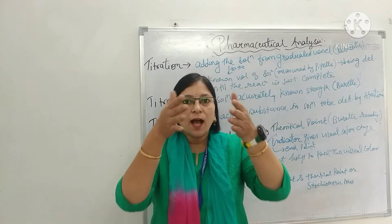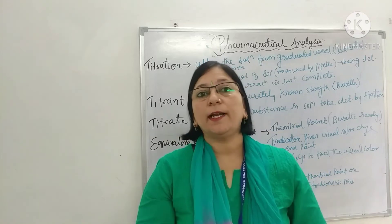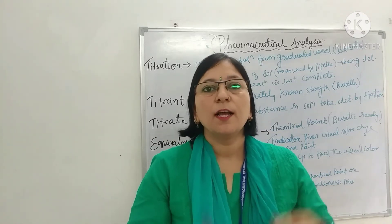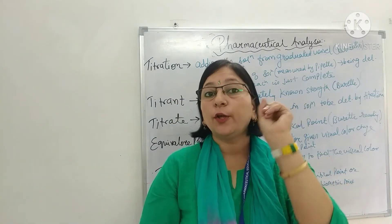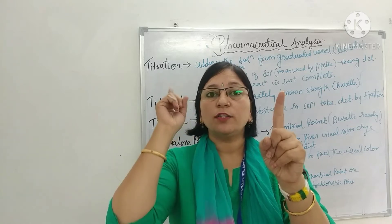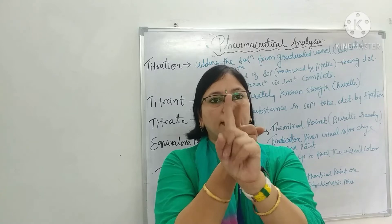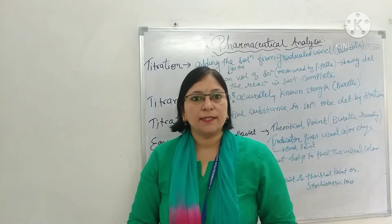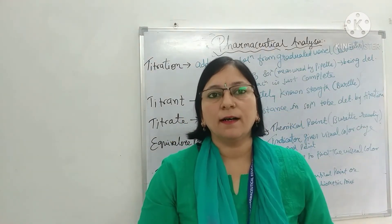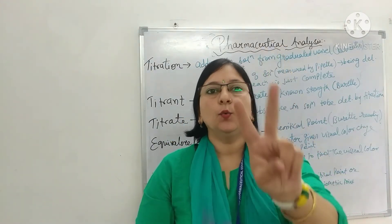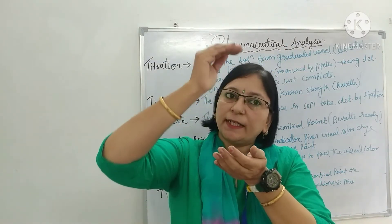Now, titration error. In the ideal case of a titration, the visible end point and the theoretical end point — जो equivalence point है — should coincide exactly। अगर हम ideal titration की बात करें, तो हमारा theoretical end point और जो हमारा indicator के बाद end point आया है — burette की reading — यह दोनों एक जैसी आने चाहिए। But in practice, this can never happen, and usually a very small difference occurs between the two, and the visible end point is slightly higher.